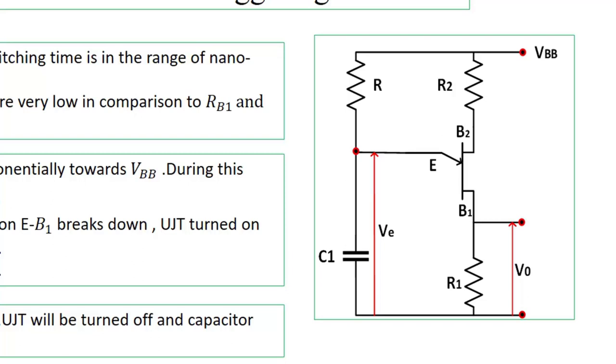There will be a voltage developed across resistance R1, marked as V0, the output voltage. This voltage will be applied across the thyristor gate to cathode. If this voltage equals the minimum gate to cathode voltage required to turn on the SCR, then the thyristor will be on.